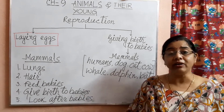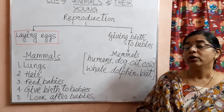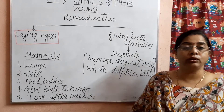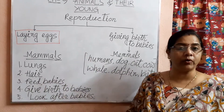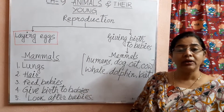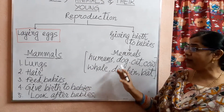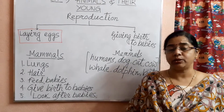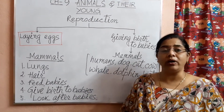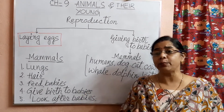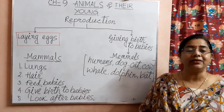Mammals are the animals who give birth to their babies. They do not lay eggs for reproduction. Mammals have some special characteristics. Let us study them one by one — what are the special features or characteristics of mammals?